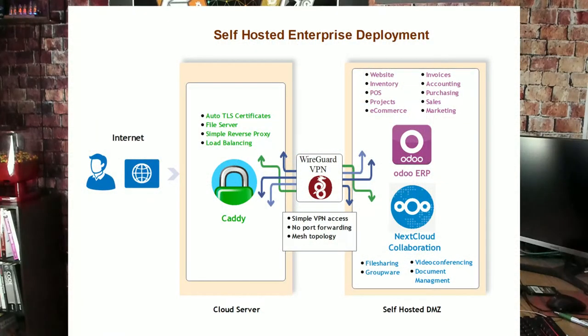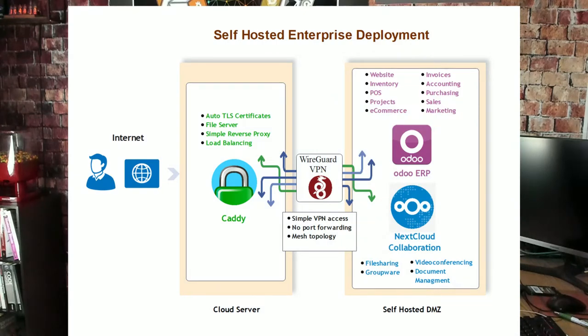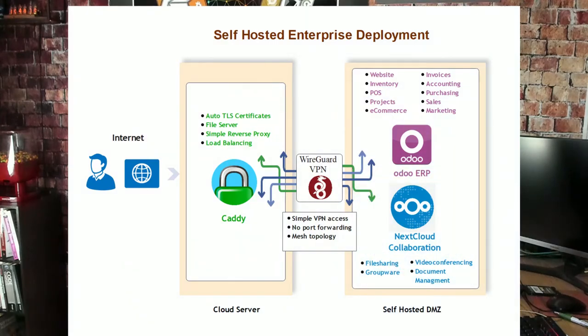We'll set up Odoo, which will provide a website for digital presence, inventory management, point of sale management, project management, invoices, accounting, purchasing, as well as sales and marketing. Then we'll add Nextcloud — another very popular service — which will provide file sharing, groupware, video conferencing, and document management. These two open source solutions also offer the ability to scale up in the cloud if the business grows and needs additional capacity.